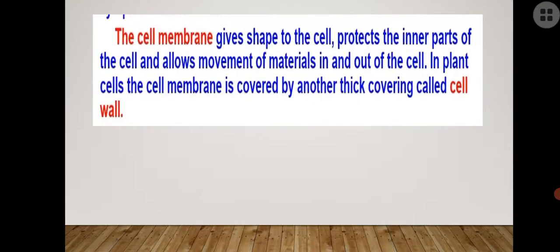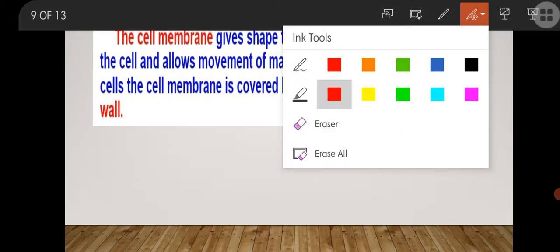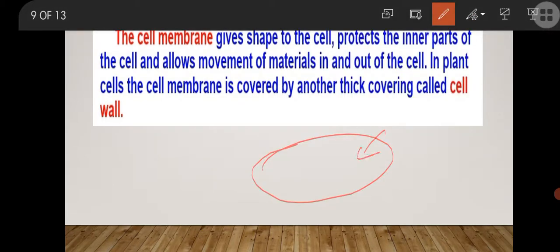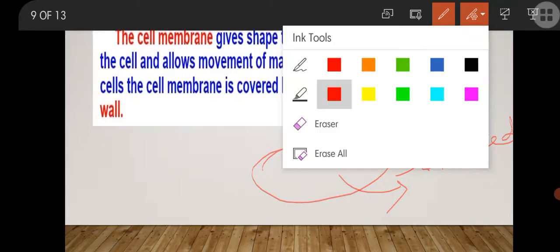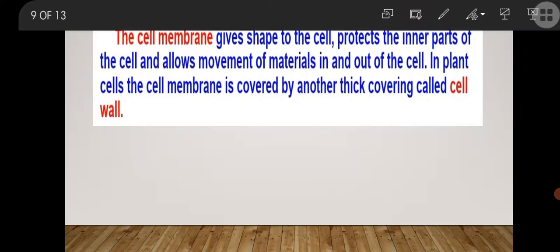Now let's talk about the very first part — the cell membrane. Cell membrane gives shape to the cell and protects the inner parts. It is also called a selectively permeable membrane because it allows movement of materials in and out of the cell, but only allows selected materials to enter or exit. That is why its function is to protect the cell and give it shape.